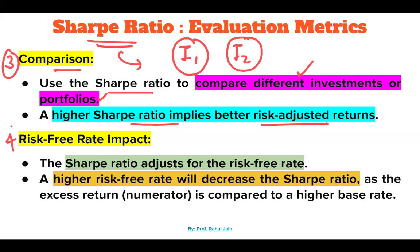Point number four is risk-free rate impact. The Sharpe Ratio adjusts for the risk-free rate. A higher risk-free rate will decrease the Sharpe Ratio, as the excess return in the numerator is reduced relative to the base rate.